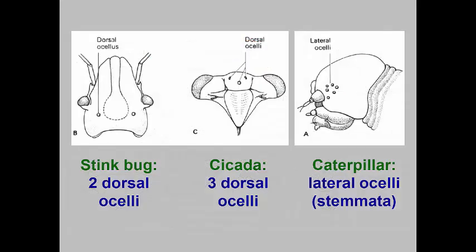In these illustrations, we can see different ocelli and stemmata arrangements. The stink bug has only two dorsolateral ocelli. The cicada has two dorsolateral ocelli and a median ocellus. The caterpillar has a grouping of stemmata where compound eyes would normally be. Because of the arrangement of these stemmata, caterpillars can detect gross movements in their environment.